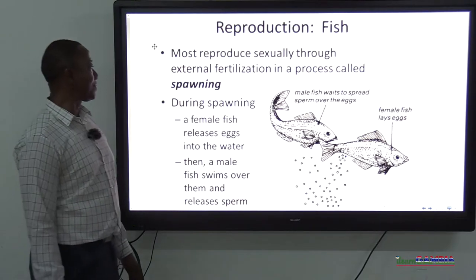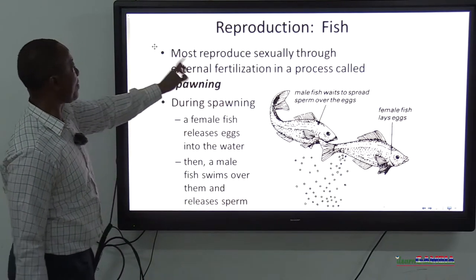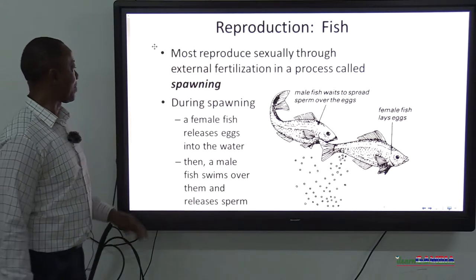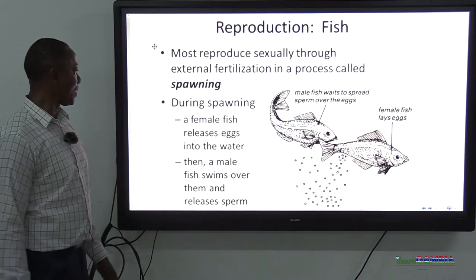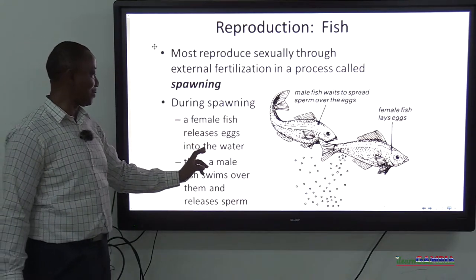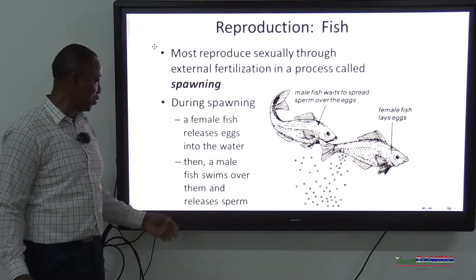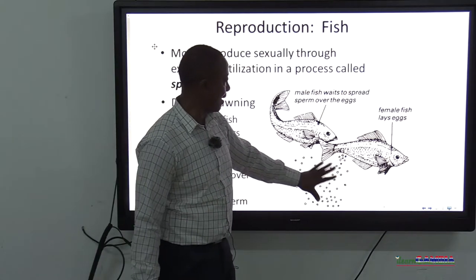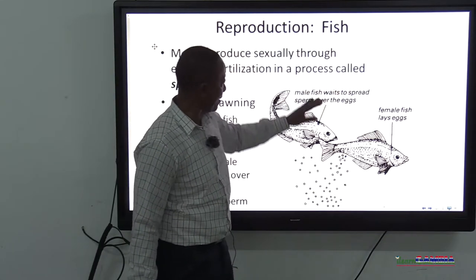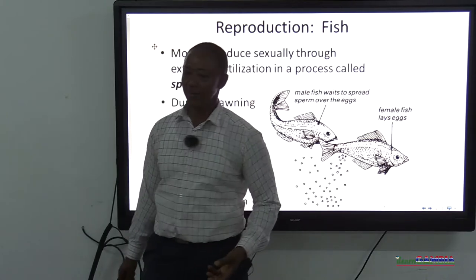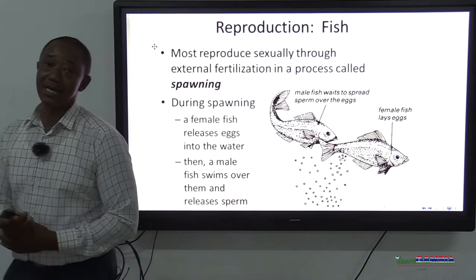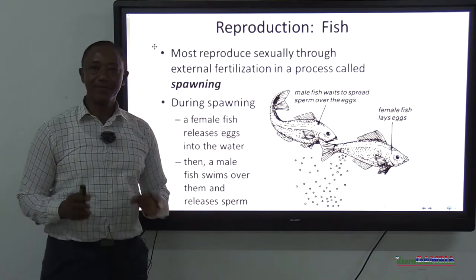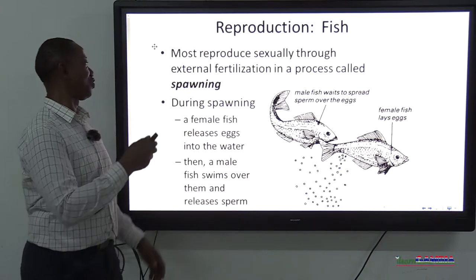For reproduction in fish: most reproduce sexually through external fertilization in a process called spawning. During spawning, a female fish releases eggs into the water, then a male fish swims over them and releases sperm. All of this happens inside the water and it is so designed that a lot of the eggs are fertilized. Once fertilized, they continue development.